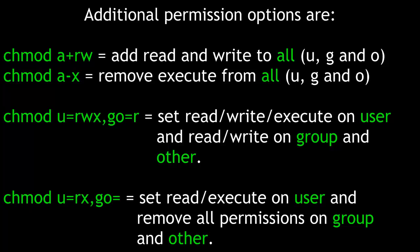Other syntax examples include chmod u=rwx,go=r, which sets read, write, and execute on user, and read on group and other. You can also use chmod u=rx,go= — leaving go= open-ended simply removes any permissions set on group and other, so this full command sets read and execute on user and removes all permissions from group and other.